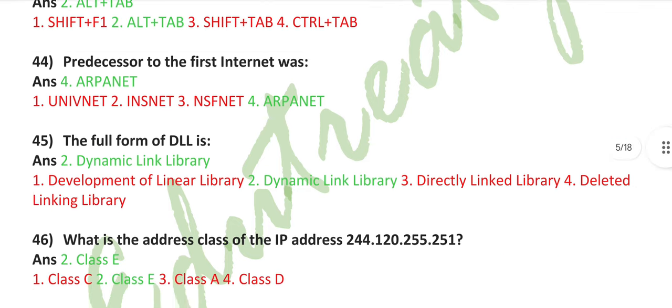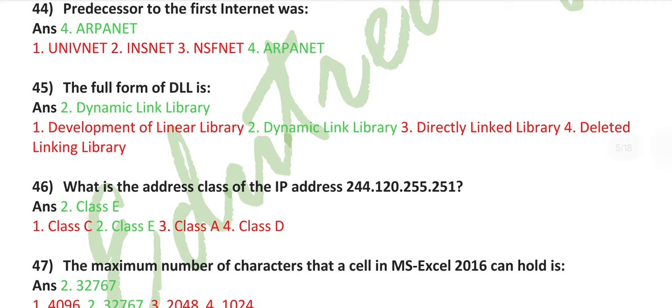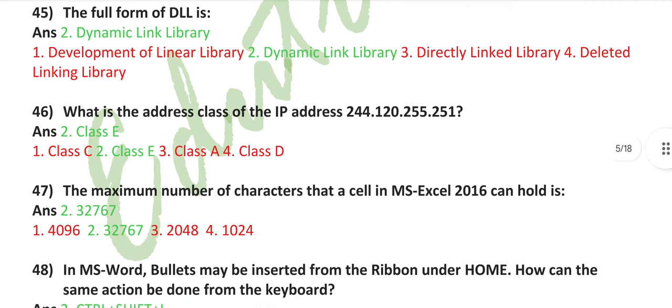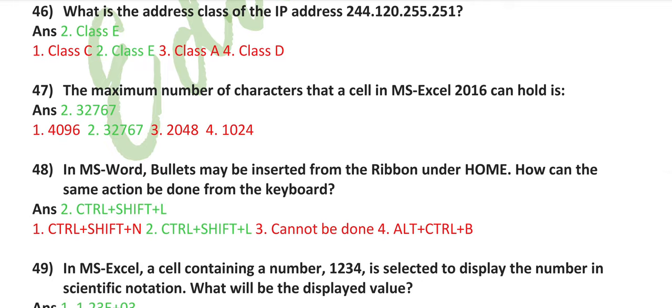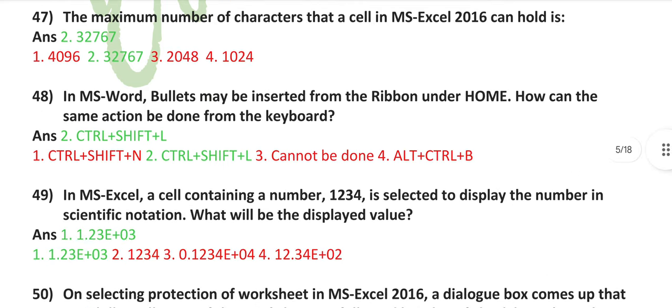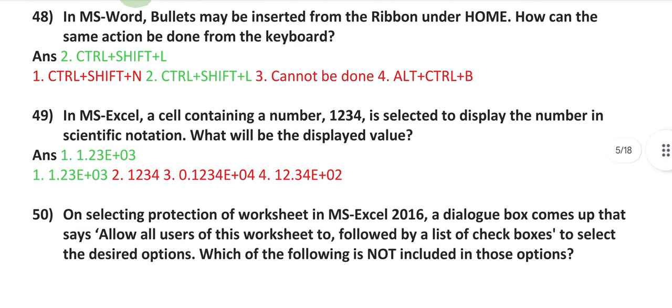The predecessor to the first internet was ARPANET. The full form of DLL is Dynamic Link Library. What is the address class of IP address 244.120.255.251? Class E. The maximum number of characters that a cell in MS Excel 2016 can hold is 32,767.